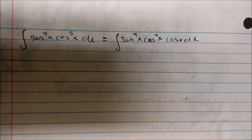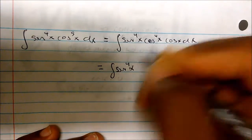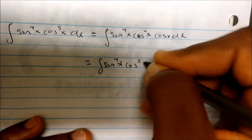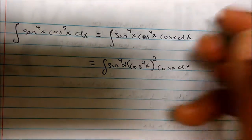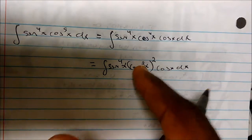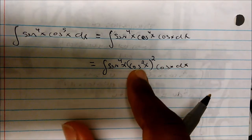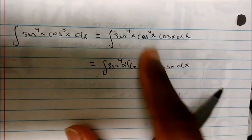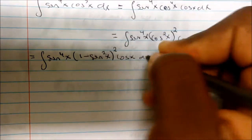Before I use that, I want to show you something important. This integral is actually equal to the integral of sine to the fourth of x, times cosine squared of x, squared, times cosine of x dx. Notice I rewrote cosine to the fourth of x as cosine squared of x, all squared. We know that cosine squared of x is our identity, and then we have to square it for it to equal cosine to the fourth of x. So my integral is actually sine to the fourth of x, times one minus sine squared of x, squared, times cosine of x dx.